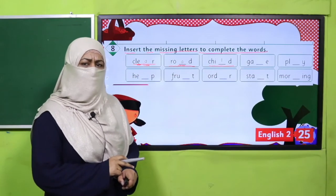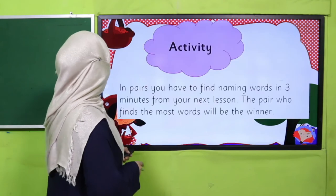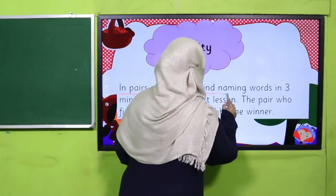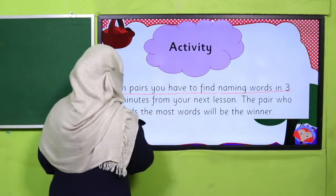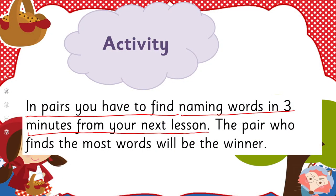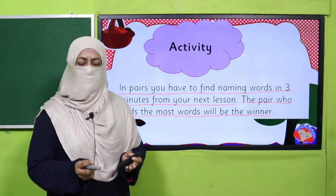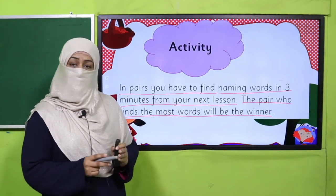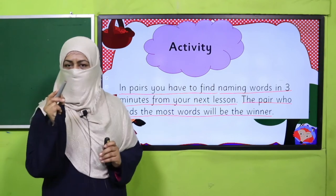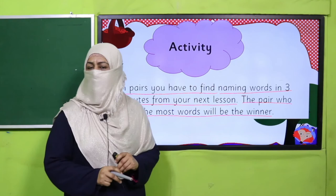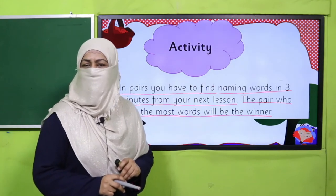Yes, my dear children — are you done? Good job! Now I'm giving you an activity in pairs. You have to find naming words in three minutes from your text, which is in your lesson. The player who finds the most words will be the winner! Quickly open the text, find maximum naming words, take a pencil in your hand, keep making circles. Your teacher will assign you three minutes — let's see who wins! Pause the video and enjoy the activity.